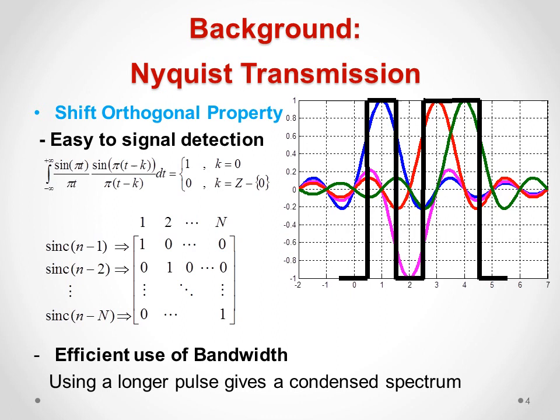The Nyquist pulse is a very efficient pulse for pulse shaping because of a very interesting and useful property sometimes called the shift orthogonal property. If we look at this figure and look at the colored curves showing the time-shifted Nyquist pulses, we see that at all integer points like 1, 2, 3, 4, only one of these pulses has a non-zero value and the others are all zero.